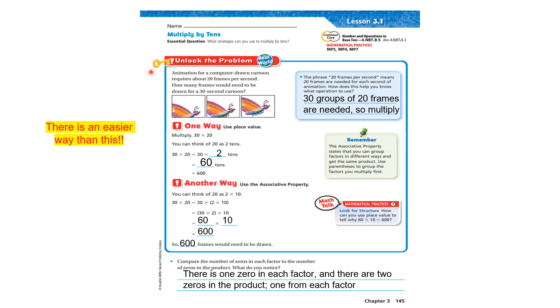I have to show you these two ways before we get to the easier way. The problem says, animation for a computer-drawn cartoon requires about 20 frames per second. How many frames would need to be drawn for a 30-second cartoon? Well, let's look at place value.